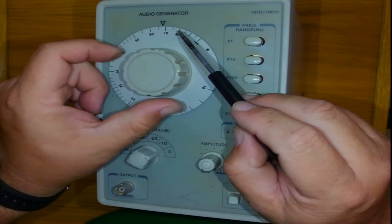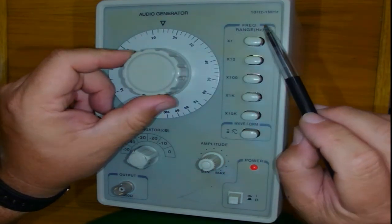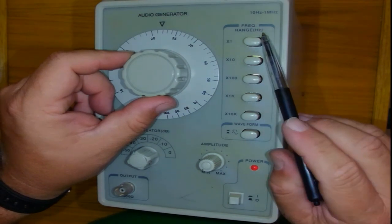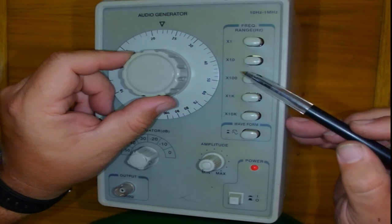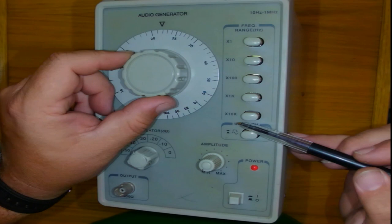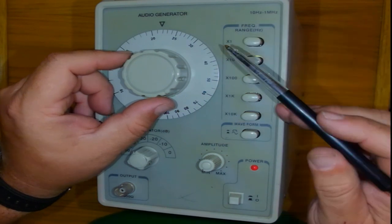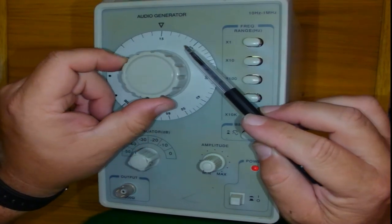So ladies and gentlemen how do we solve this problem of 150? That brings me to the second part of the range. We have got something called frequency range times 1, times 10, times 100, times 1,000 and times 10,000. So if I want 150, I should then go to 15.